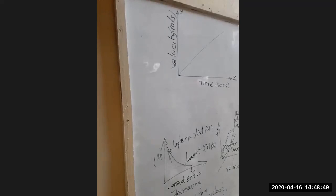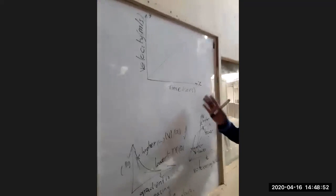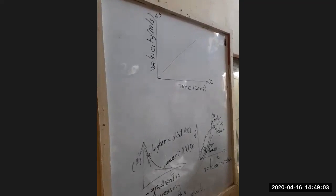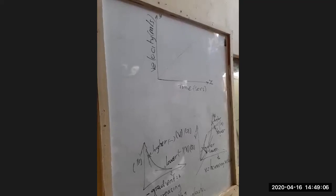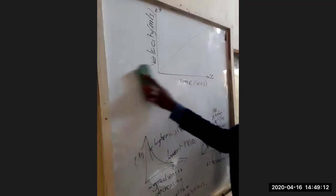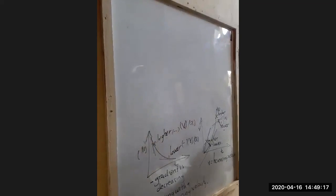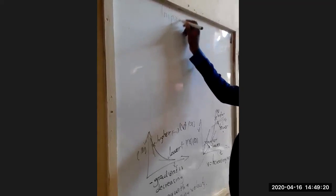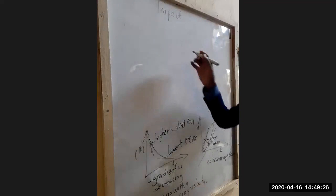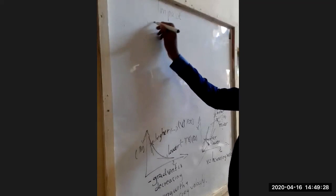That was question 10. Now question 11 — a high jumper lands on sawdust. Explain how the sawdust helps in reducing the force of impact. This is a topic we just covered before the break. An impact force is the force that acts on a body within a very short time. The force is given as mv minus mu over t.